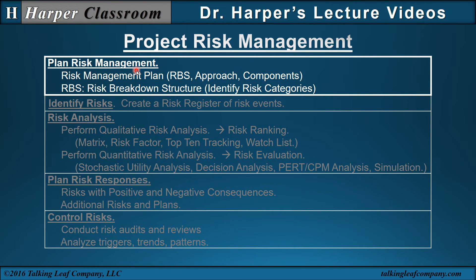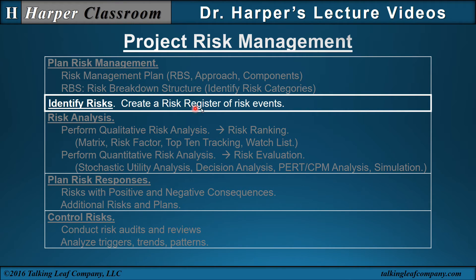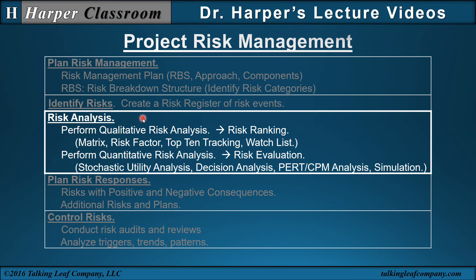The first process is planned risk management — a risk management plan and risk breakdown structure where we identify risk categories, approach, and components of risk. Next, identify risk: we create the risk register of risk events, identify the risks, and describe them. Risk analysis can be qualitative or quantitative. Qualitative risk analysis includes risk ranking with tools like matrix, risk factor, top 10 tracking, and watch list. Quantitative risk analysis is risk evaluation using stochastic utility analysis, decision analysis techniques, PERT and CPM analysis with probabilities, and simulation.